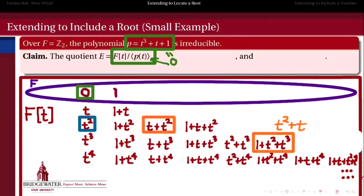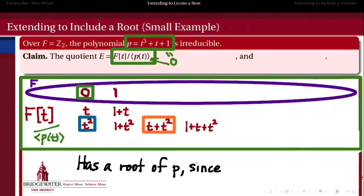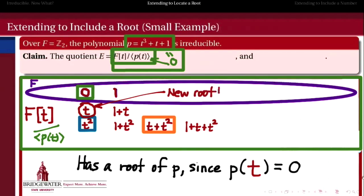Similarly, 1 + t² + t³ identifies with t² + t. We can reduce all third powers of t — and therefore all higher powers — to lower order. When the dust settles in this quotient of the polynomial ring by the principal ideal generated by p, we get a field with 8 elements. Inside this field, the polynomial p has a root — because p(t) = 0 by our declaration. By construction, we have created a set — which turns out to be a field — that extends F and contains a root of our irreducible polynomial p.